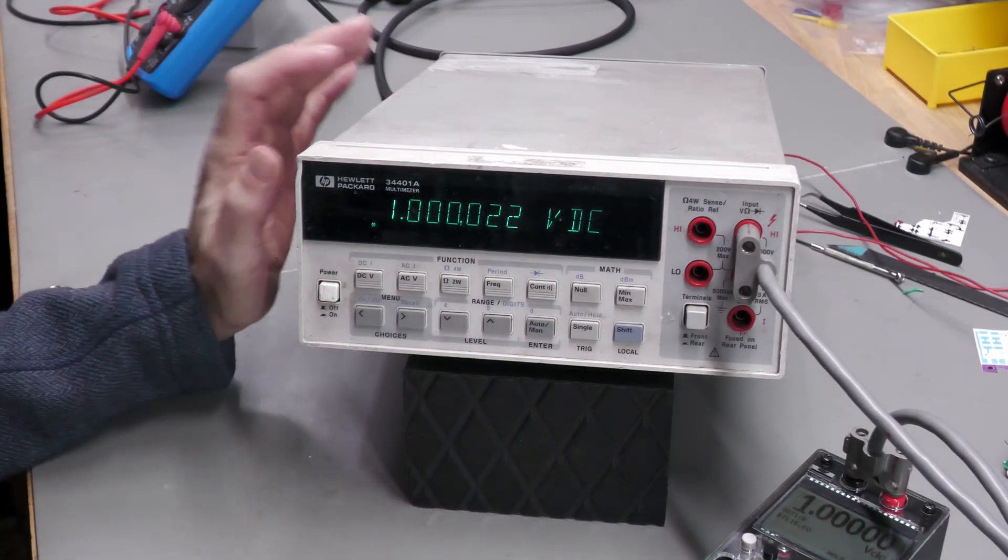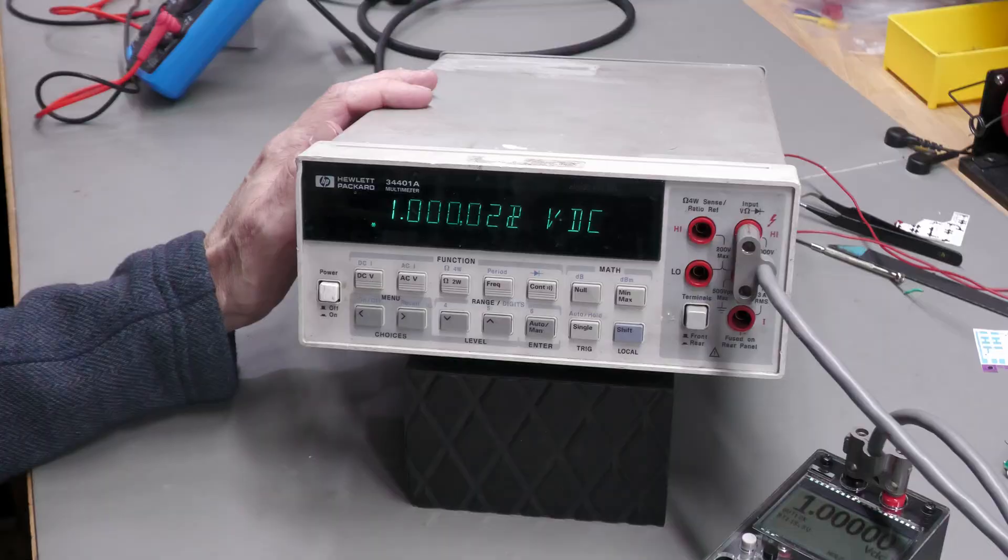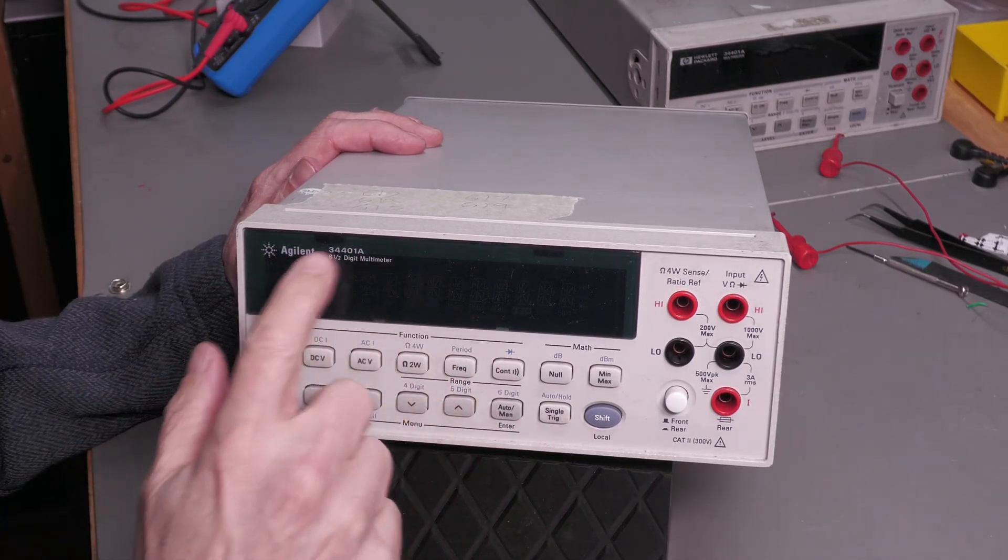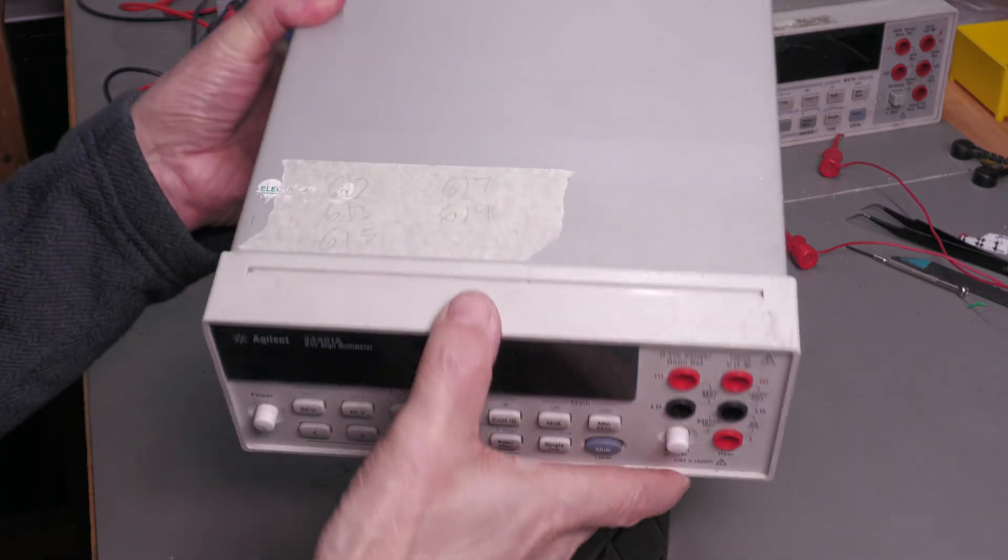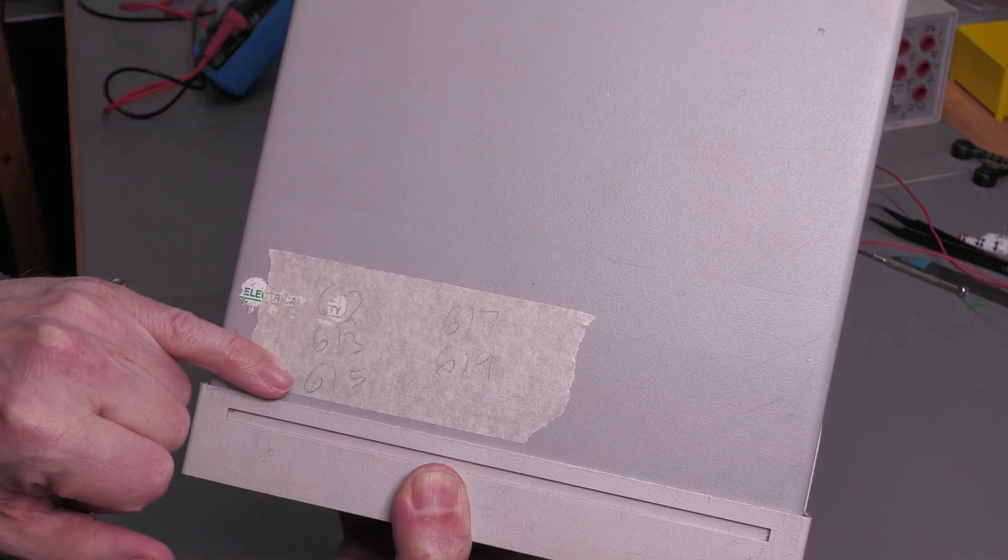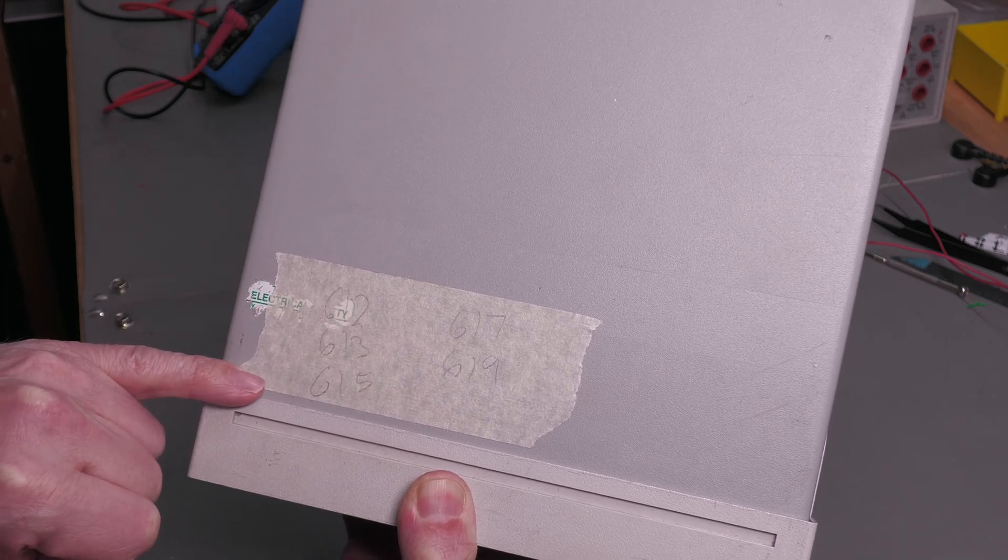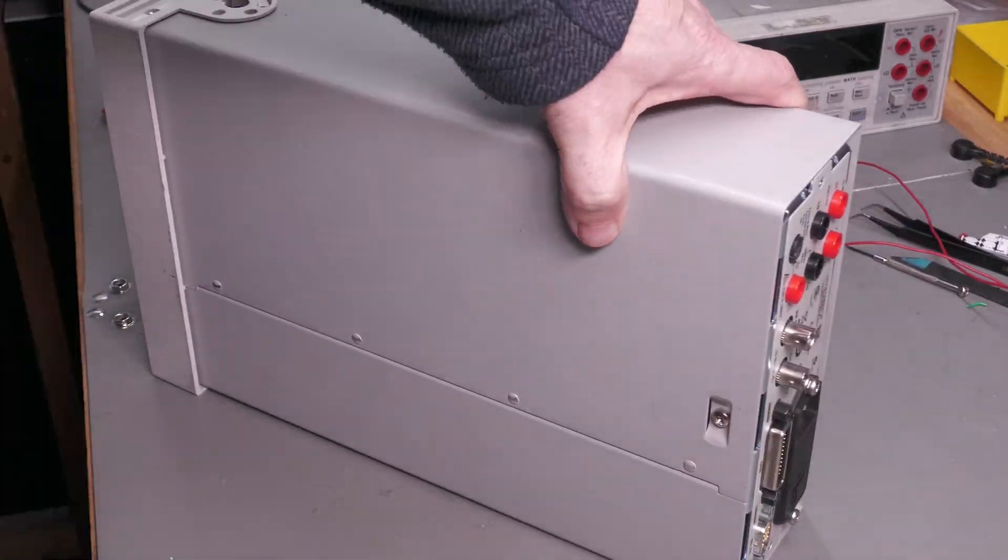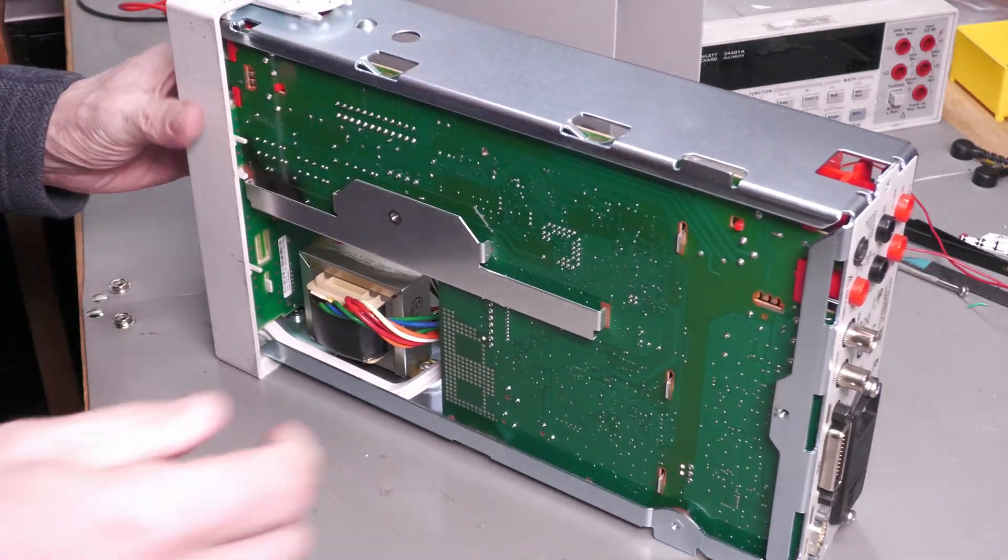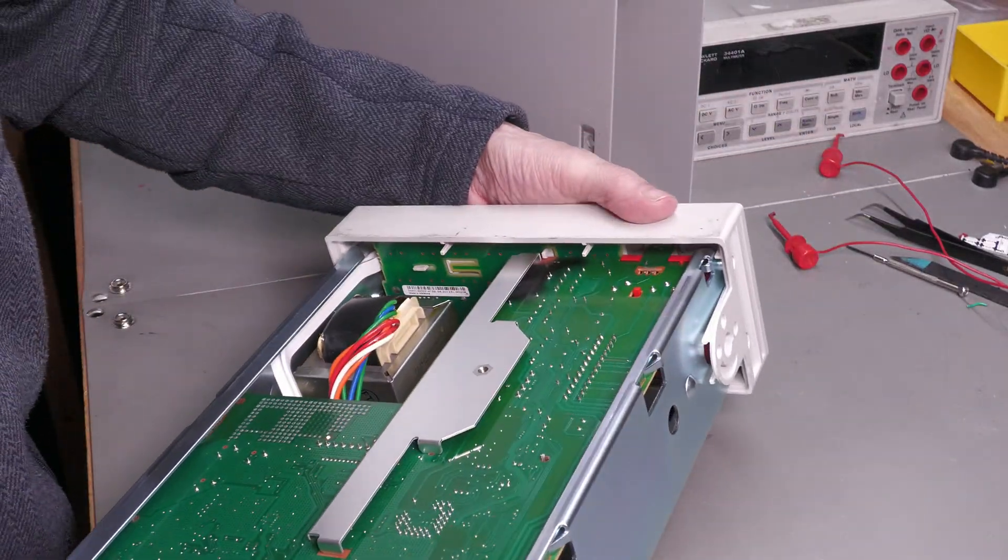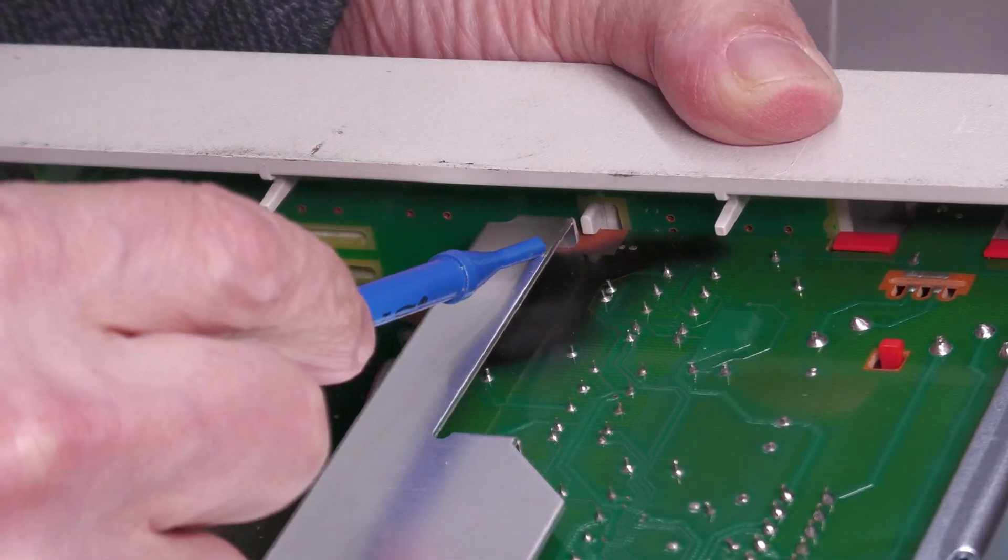Now I do actually have another 34401A for repair. Let me just bring it on to the workbench and take a quick little look. Here it is. It's an Agilent branded 34401A and it's got some masking tape on the top of it as well. Let's take a quick little look. Error code 612, 613, 615, 617 and 619. No, it couldn't be. Oh no. Oh no. Yes, another burnt out board.